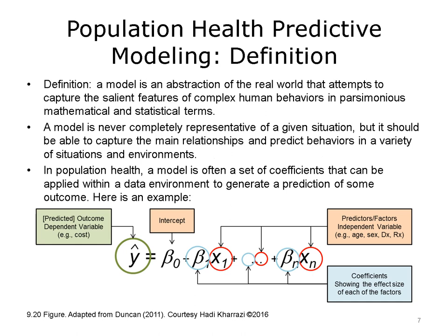A predictive model is an abstraction of the real world. A good model attempts to capture the most important features of the complex health interactions in simple mathematical or statistical terms. However, a model is never completely representative of a given situation. A model should be able to capture the main relationships and predict behaviors in a variety of situations and environments, but it is not required to always correctly predict the exact outcomes. In population health, a model is often a set of coefficients that can be applied within a data environment to generate a prediction of some outcome.